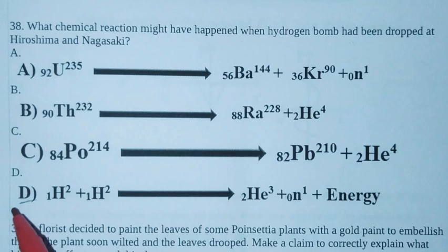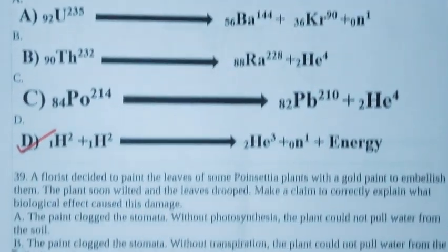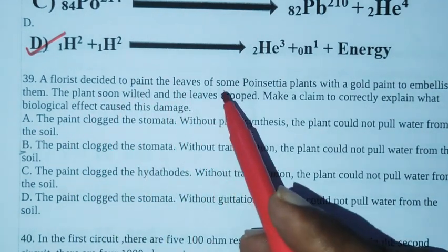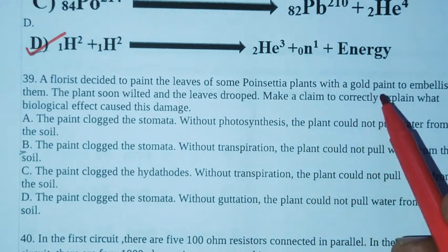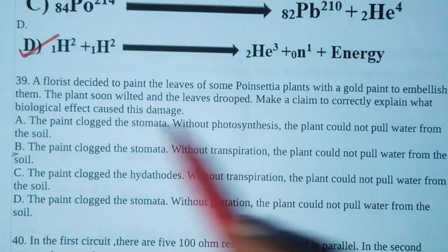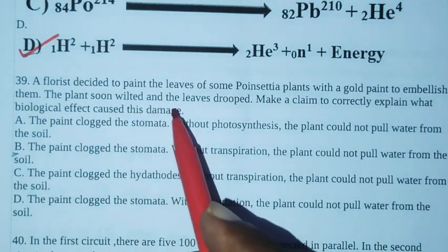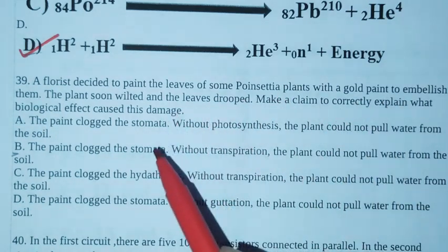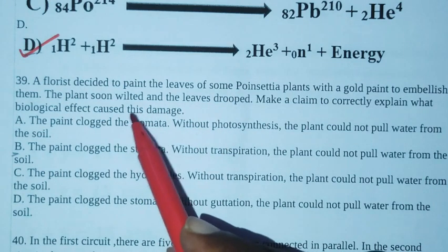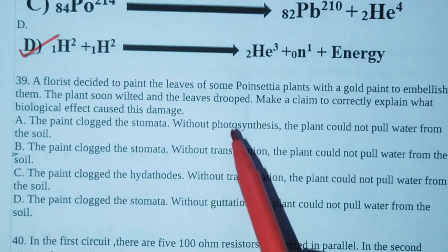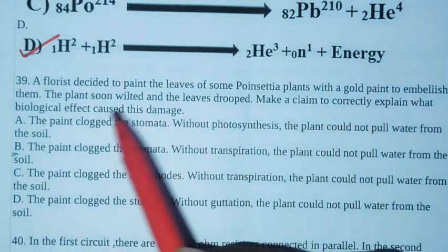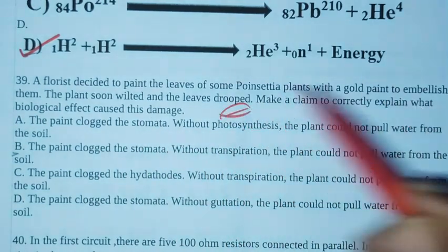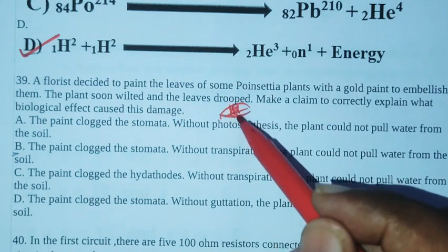Next 39. A florist decided to paint the leaves of some Poinsettia plants with a gold paint to embellish them. The plants soon wilted and the leaves drooped. The Poinsettia plant leaves were painted with gold paint. Make a claim to correctly explain what biological effect caused this damage.